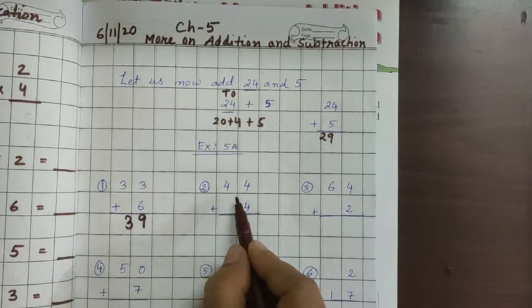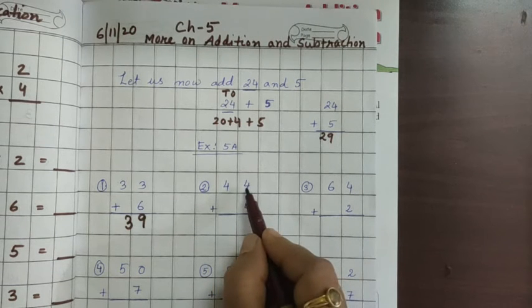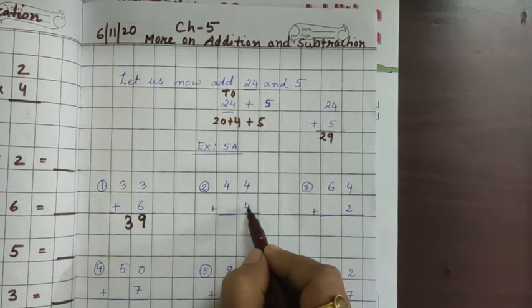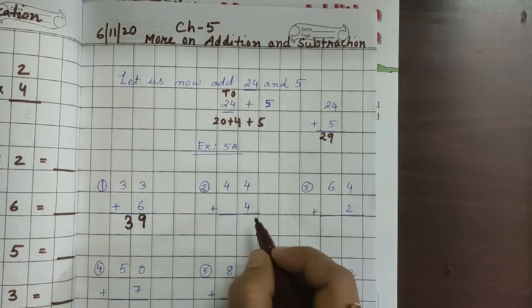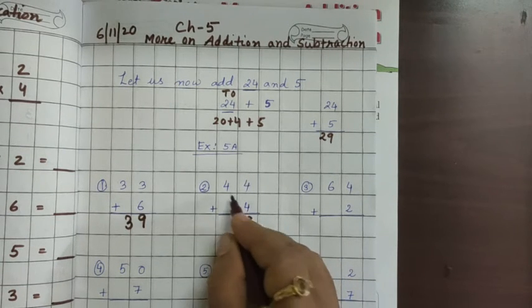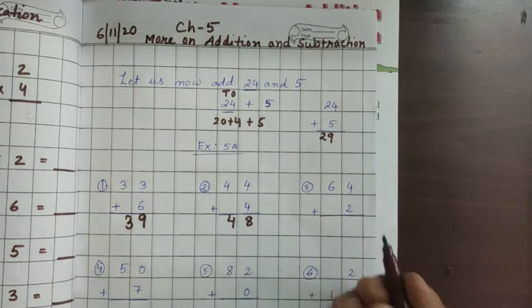Let us see the next one. 44 plus 4. So keep one number in your mind and count another 4 forward. 4 plus 4, how much? 8. And 4 down nothing is there. So automatically 4 will come down.